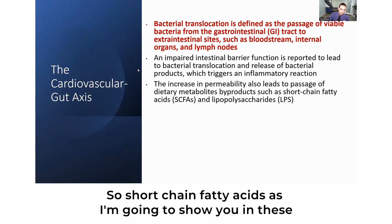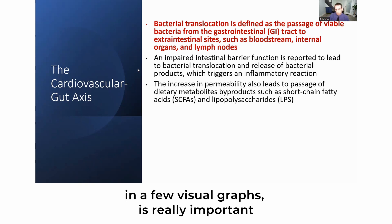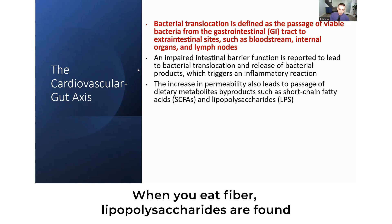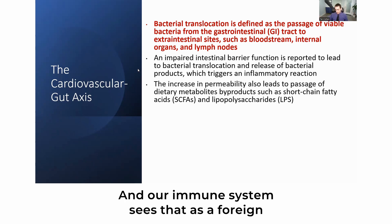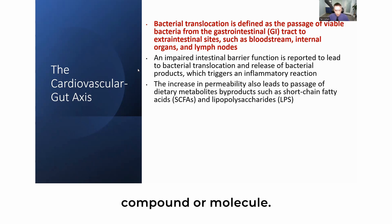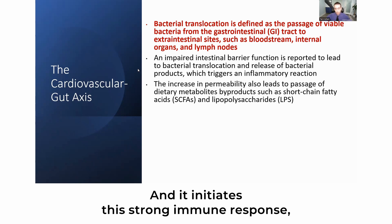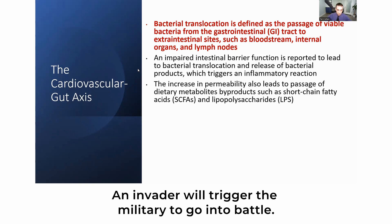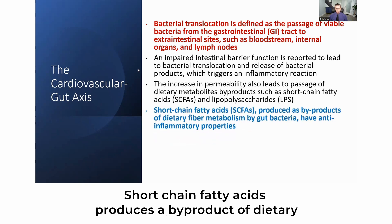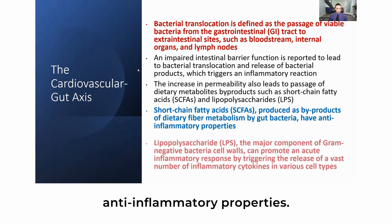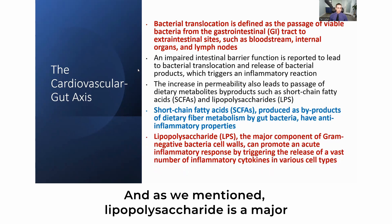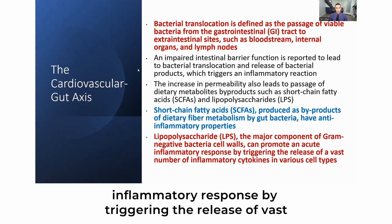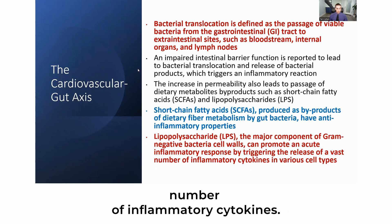Short-chain fatty acids, as I'll show in a few visual graphs, are really important for reducing inflammation — they're produced by gut bacteria when you eat fiber. Lipopolysaccharides are found on certain bacteria, and our immune system sees them as foreign molecules, initiating a strong immune response — almost like an invader triggering the military to go into battle. LPS is a major component of gram-negative bacteria cell walls and can promote an acute inflammatory response by triggering the release of a vast number of inflammatory cytokines.